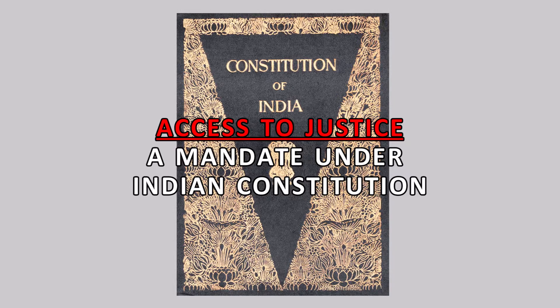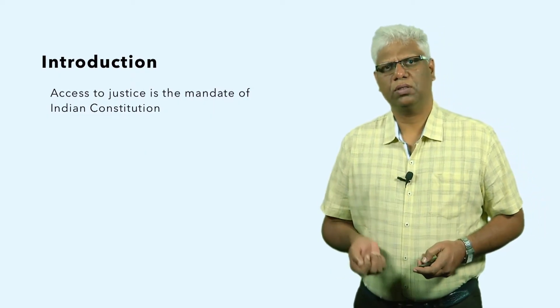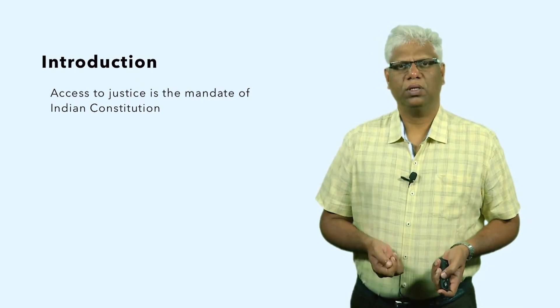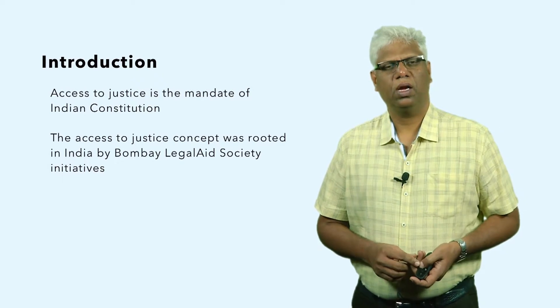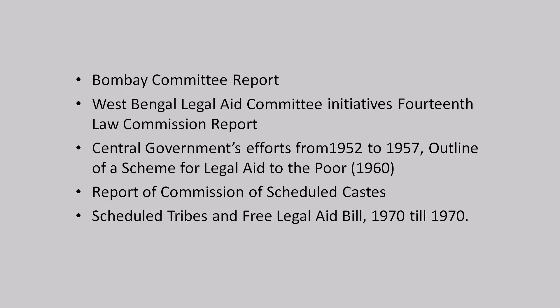As we have discussed in earlier modules, access to justice is a mandate given by the constitution, visible under Articles 14, 21, 22, and many others. Though access to justice is part of the constitutional mandate, the concept — particularly in terms of legal aid — was rooted by the Bombay Legal Aid Society's initiatives, strengthened by the Bombay committee report and the West Bengal Legal Aid committees, and further developed through the 14th Law Commission report, which was the first law commission report on legal aid.